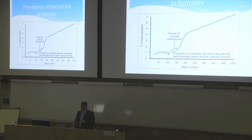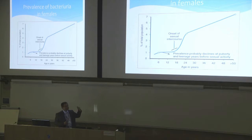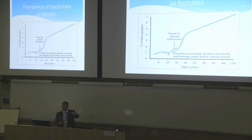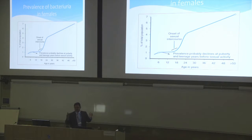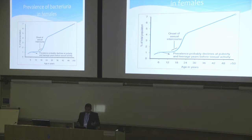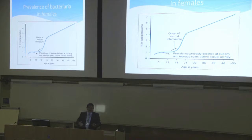Looking at the prevalence of bacteriuria in females: up to about 15-18 years of age it's very similar to males. Then with the onset of sexual activity, prevalence goes up, stabilizes, and towards menopause rises again. This is especially important for females between 18 and 30. With the onset of sexual intercourse there's a big surge of urinary infections, and some linger on and become recurrent infections.